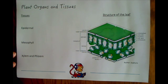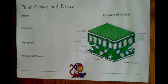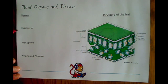So if you remember, in animals the three tissues that you need to know about are glandular, epithelial and muscular. The three tissues that you need to know about in the plant are epidermal, mesophyll, and xylem and phloem.